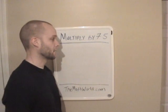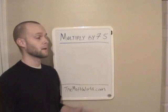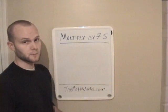Hey everyone, this is Kevin from TheMathWorld.com and today we're going to be going over a nice little trick, how to multiply numbers by 75. This works for big numbers, small numbers, all numbers in between.